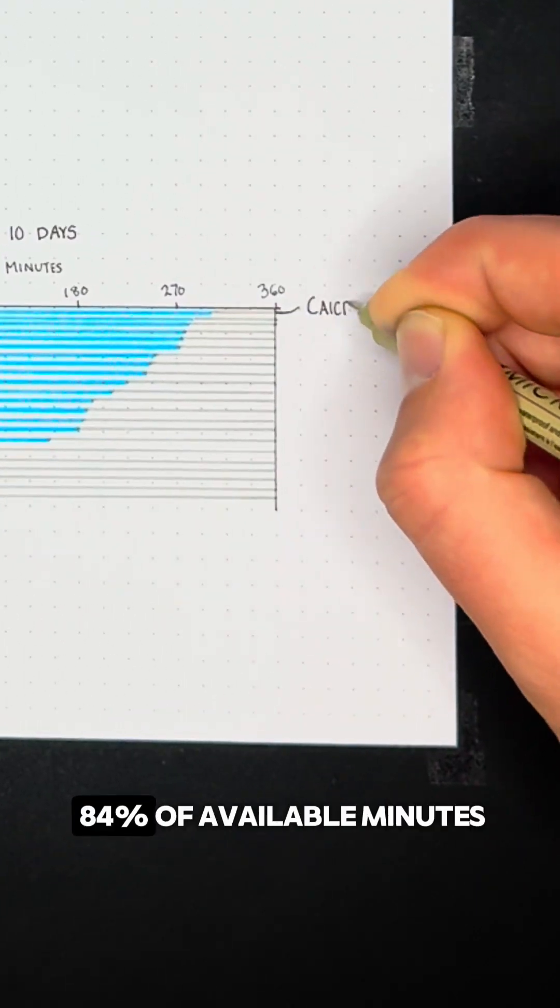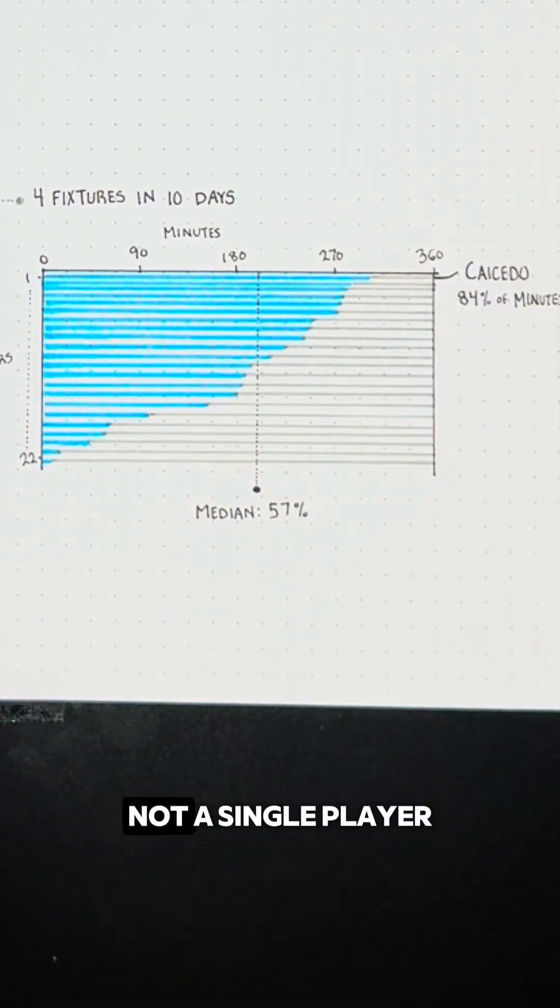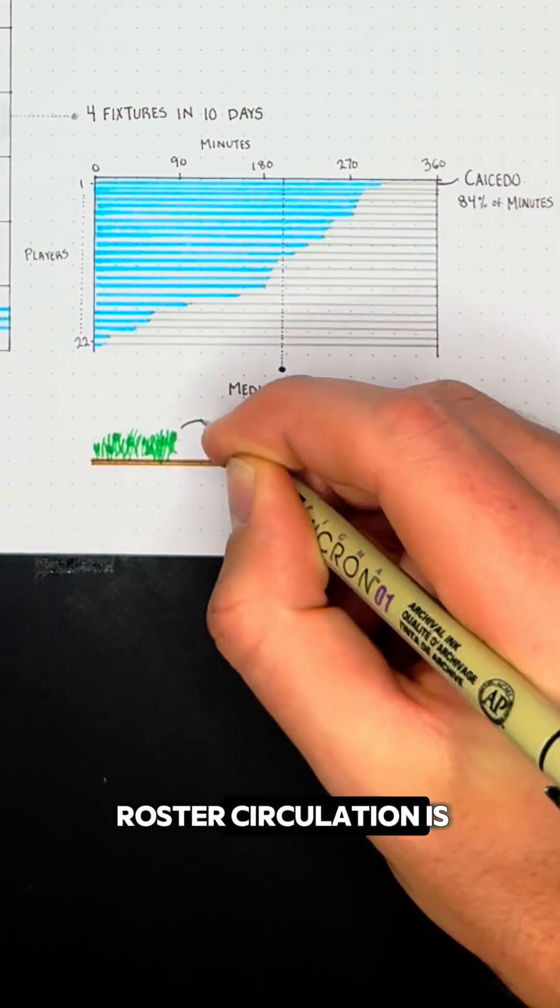Moises Caicedo led the team with 84% of available minutes, while the median player played 57%. Not a single player played every minute, highlighting just how crucial roster circulation is.